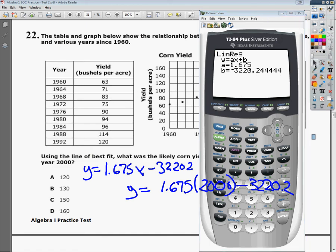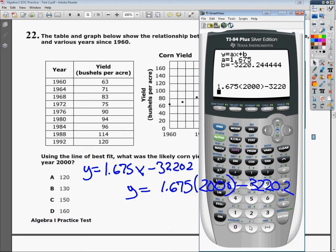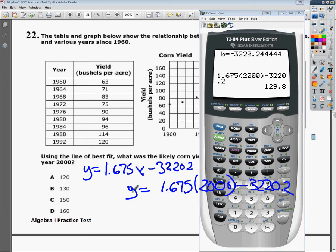So I'm just going to type 1.675, and my parentheses will be my 2000 because that's the year I want to know about, and then minus 3220.2-ish. And hit enter, and it gives me 129.8, which is pretty darn close to 130. So the answer I'm going to choose for number 22 is B.